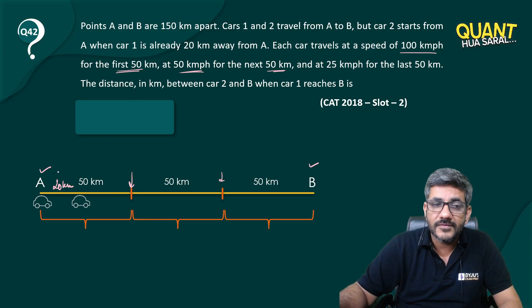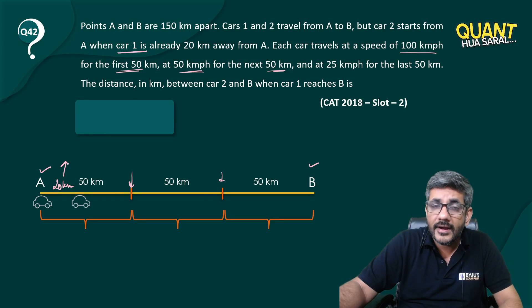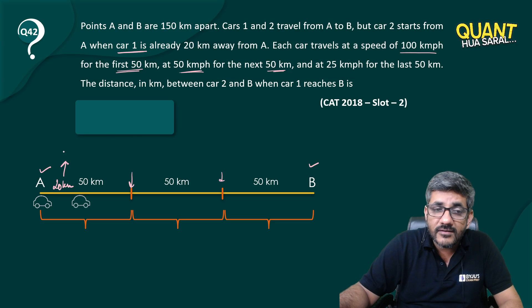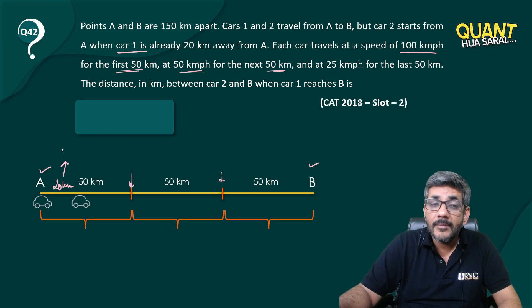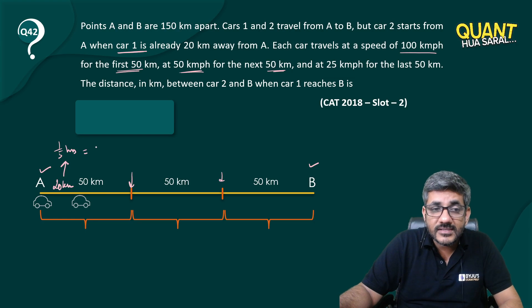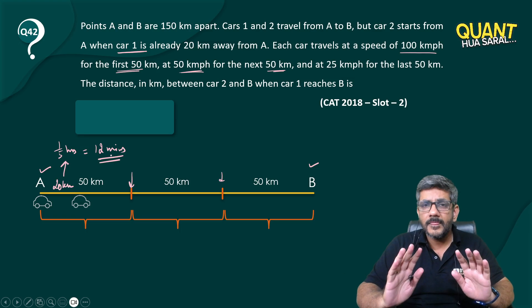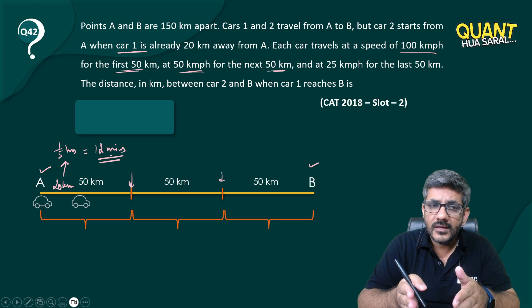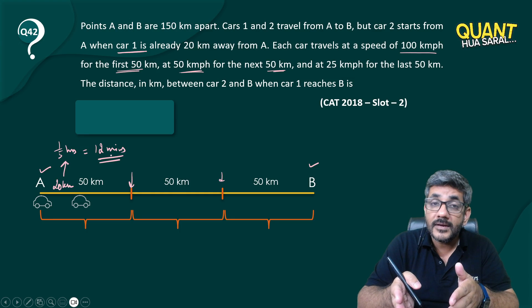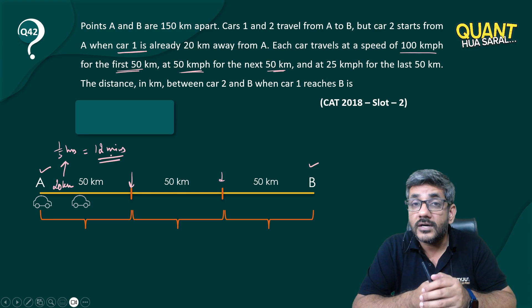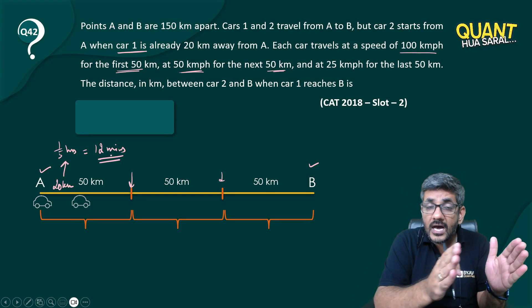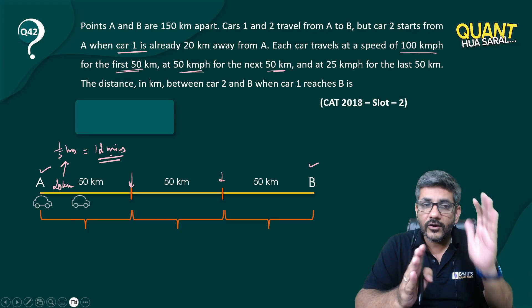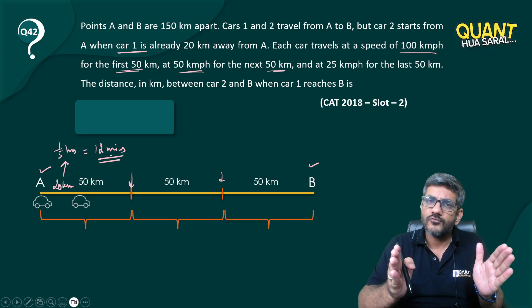Each car travels at the speed of 100 km/h for the first 50 kilometers. This 20 kilometers already covered by car one — at 100 km/h, what time does it take? One-fifth of an hour, which means 12 minutes. So car one has already covered 20 kilometers in 12 minutes, giving a gap of 12 minutes between them.